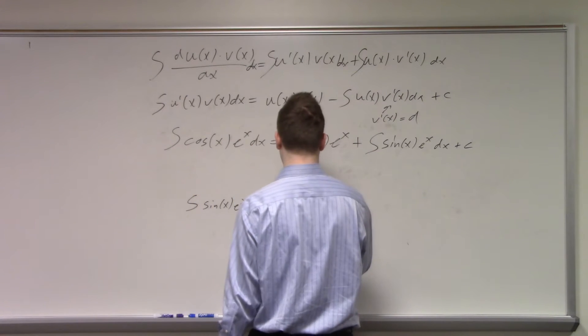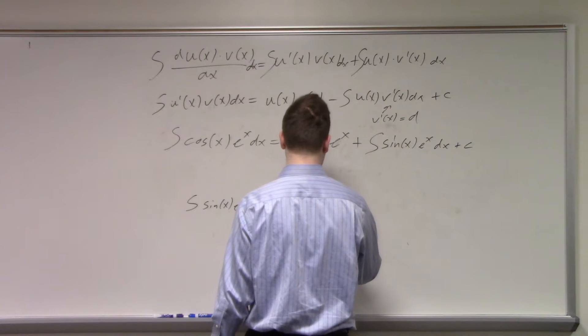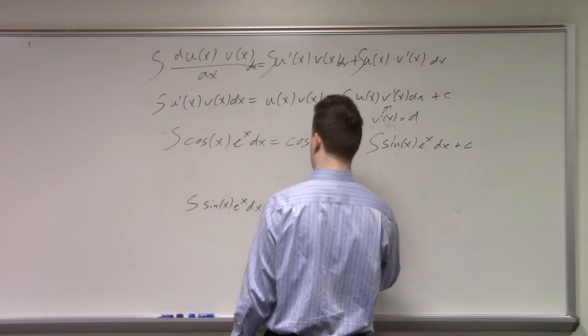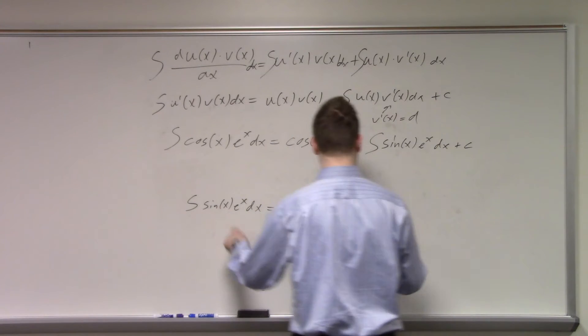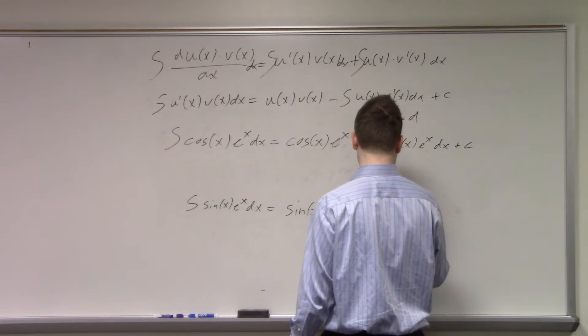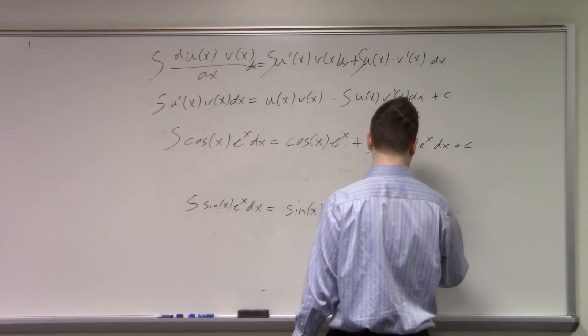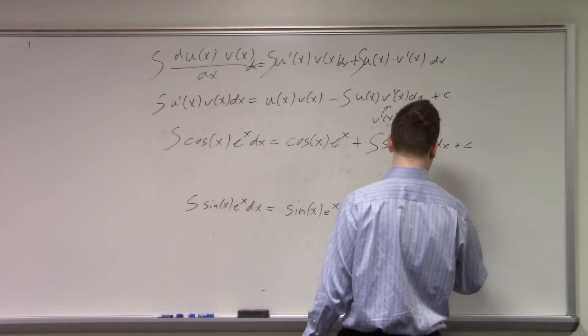So we got the sine of x times e^x, and we want to take the derivative here. Let's again take the sine as v. Why not? So you get sine(x) e^x minus the derivative of the sine, cosine(x) e^x dx, plus some constant.